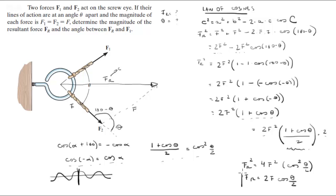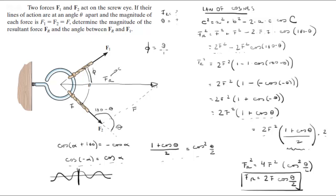Taking the square root of the whole thing, we get FR equals 2F cosine of (theta over 2). This is the magnitude of FR. Now we need to find the angle. Since the two forces are the same, just by looking at the symmetry you can tell that the angle phi between FR and either force is going to be theta over 2.